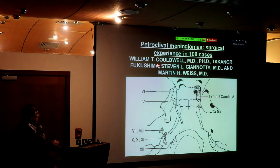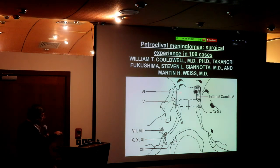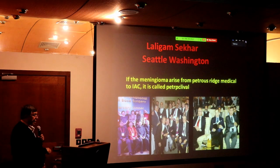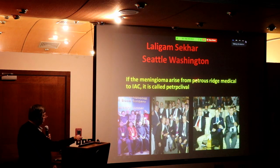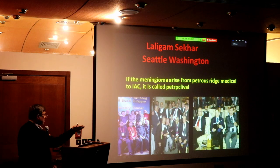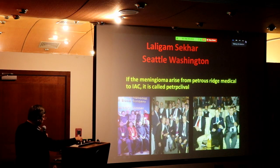People like William Caldwell, Fukushima, Takanori, and Taki say this is the area where petroclival meningioma arises. Al-Mefty from Seattle said: if the meningioma arises from the petrous medial to the internal auditory meatus, it is called petroclival — so anything medial to the internal auditory meatus is called petroclival meningioma.